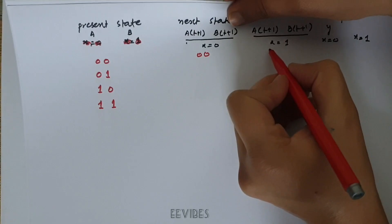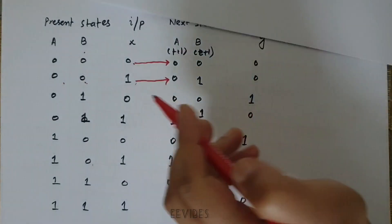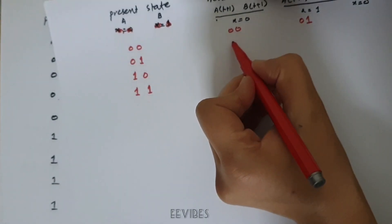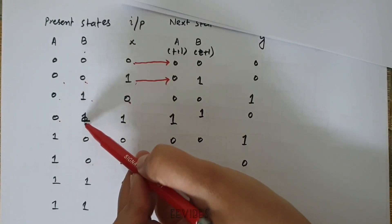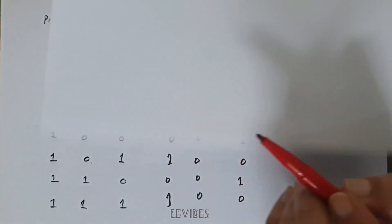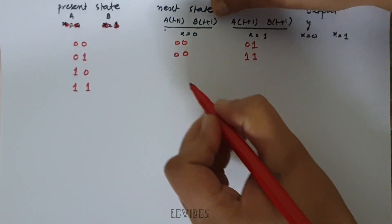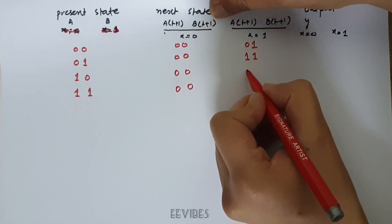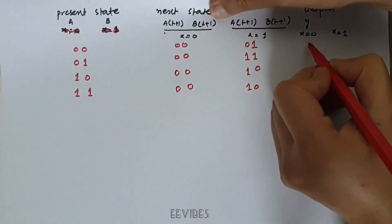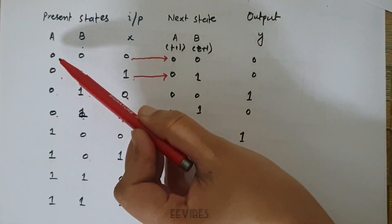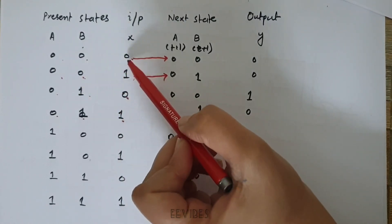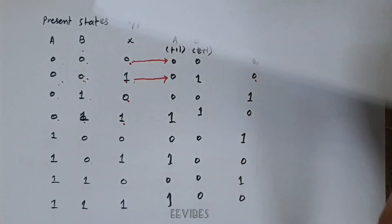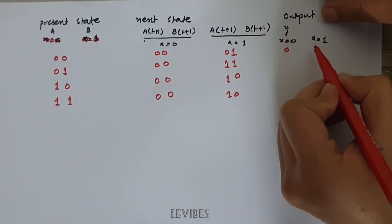Being in 0 0 state and input x equal to 1, the next state is 0 1. If you are in the 0 1 state and input is equal to 0, the next state is again 0 0. If you are in the 0 1 state and input is equal to 1, the next state is 1 1. Fill the column that way to get the next state values for x equal to 0 and x equal to 1. The output function is written similarly — when the present state is 0 0, for input equal to 0 or 1, output is 0.